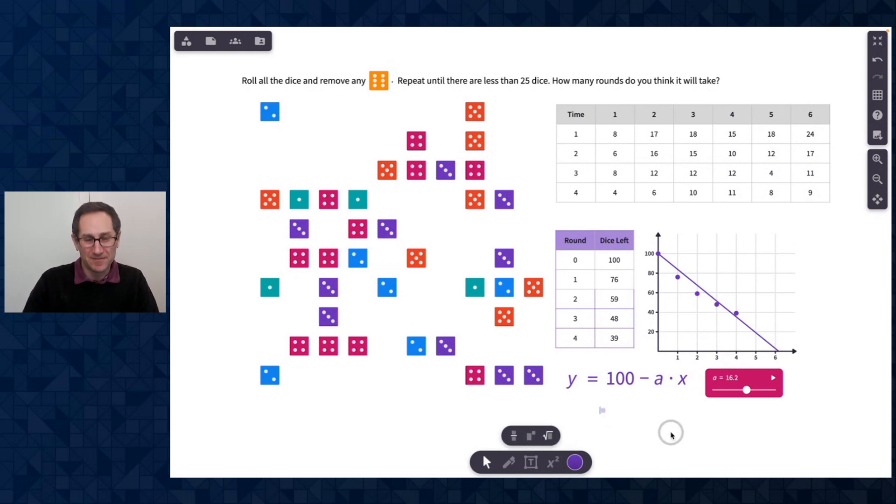So at some point, you might want to introduce an exponential function here. So let me make this one bigger. I'll make this blue. And so here, I'll do y equals 100 times 5 sixths raised to the x, right? And so here's a function where we started with 100. And each time we're doing it, 5 sixths of the dice are left, right? So a six should come up one sixth of the time. Those are being removed. So what's left is 5 sixths. I can attach this to the graph.